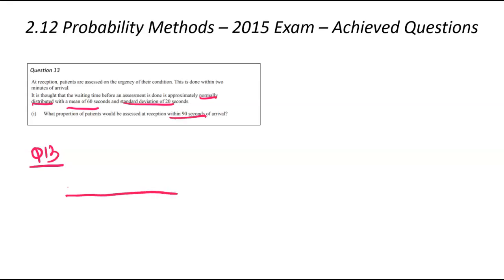Draw our normal distribution curve, always our first step. We had a mean of 60 and a standard deviation of 20. We've been asked about within 90 seconds. We have to think, what does that actually mean? Within 90 seconds will probably mean anyone seen either straight away or up to 90 seconds.